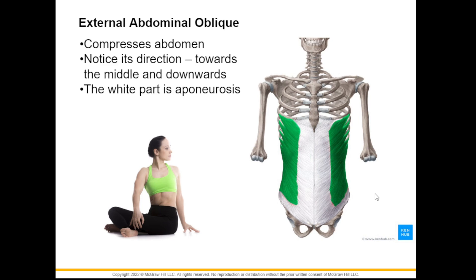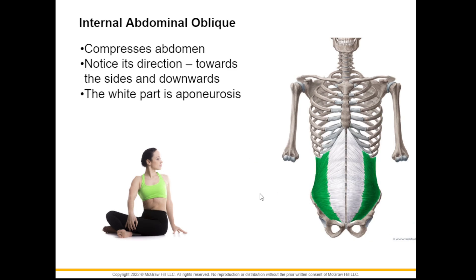Next we have the external abdominal oblique. External refers to its location — it is the outermost. Oblique is the orientation of the muscle fibers, which run towards the middle and downwards, like a letter V. The white part is your aponeurosis, and its job is to compress the abdomen. Deep inside the external abdominal oblique is your internal abdominal oblique with the same function to compress the abdomen, but the orientation is different — towards the middle but upwards, like a letter A.